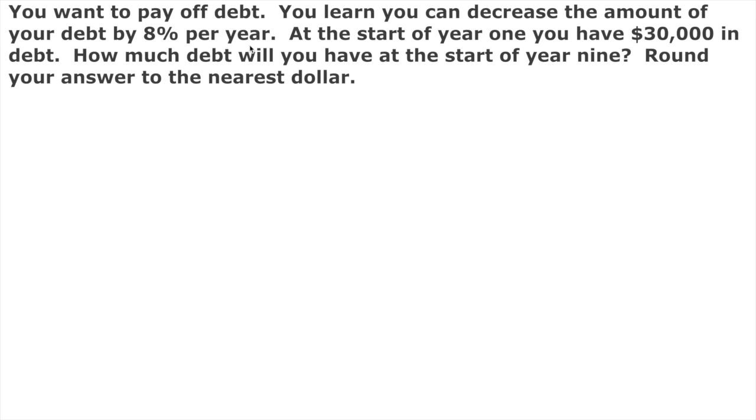So the first year you have $30,000, the second year you have $30,000 minus 8% of what you had the first year, and then the third year you have 8% less than you had the second year.